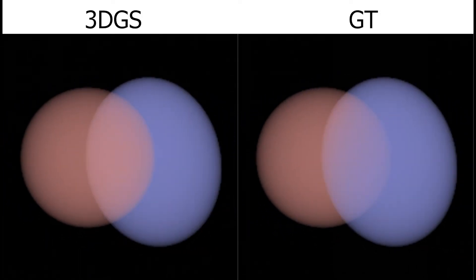Pay attention to the color between the red and blue primitives. It should be purple, like in the ground truth. However, since it must be either red or blue, the color flickers between the two.